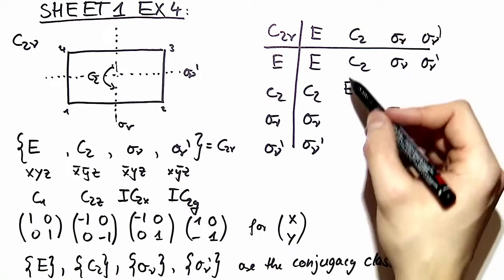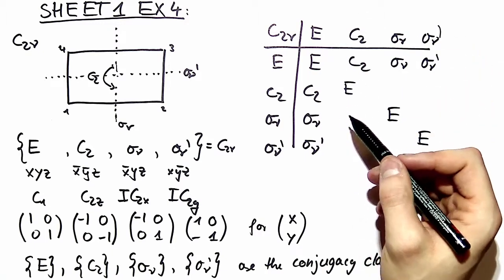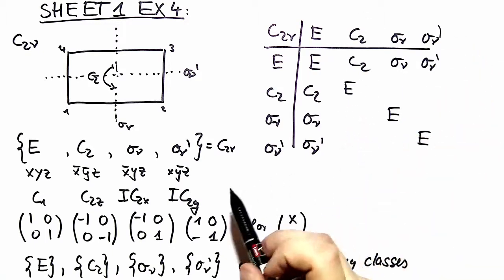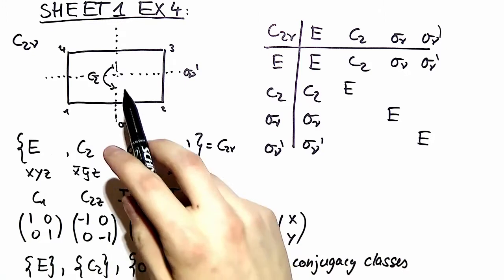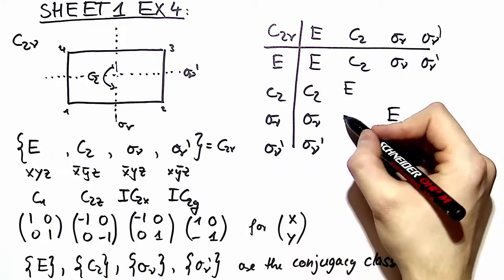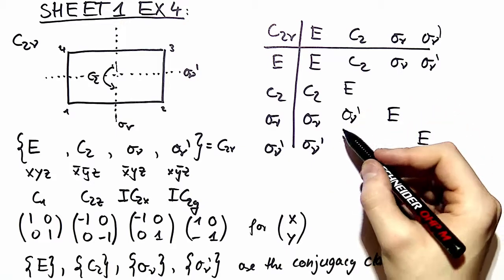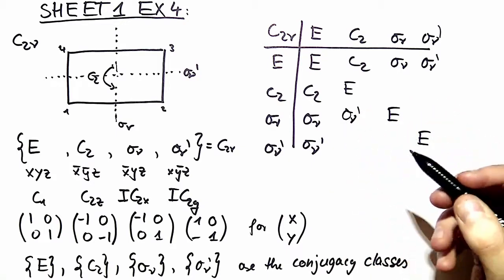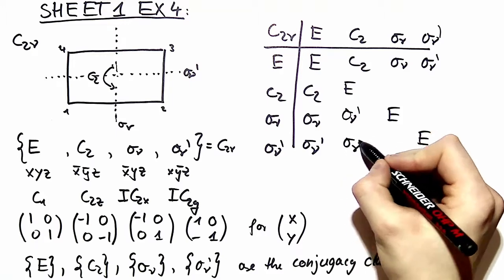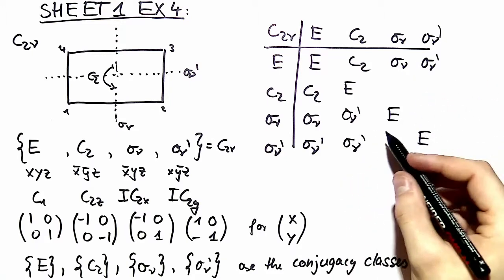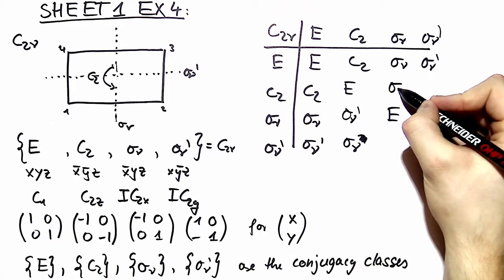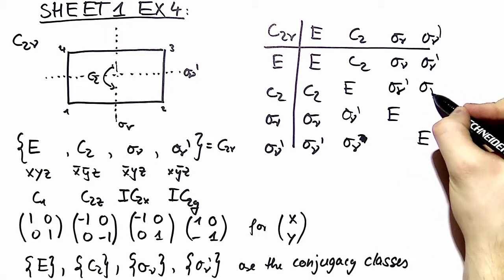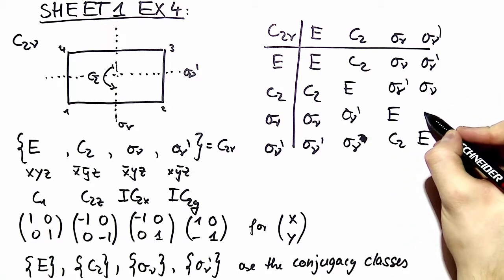Now what happens if we rotate and then mirror? We can multiply these matrices to see it or we can just look at the picture and see that this we can recognize as mirroring at the other plane and the rest can be filled out with the rearrangement theorem. Of course here is no prime.